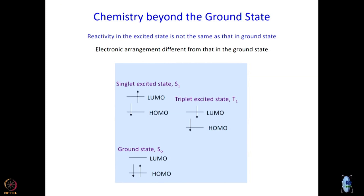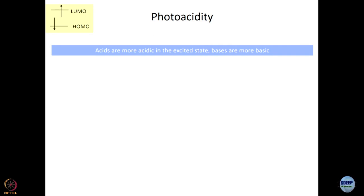Let us go to a more specific discussion on photo acidity. It is a general rule that organic acids are more acidic in the excited state, and organic bases are more basic. Take the example of phenol — it is a weak acid. Why is phenol acidic? The phenoxide ion formed by release of H+ is stabilized. Let us think in terms of an electron cloud on oxygen. If it can get delocalized, it is better. For that delocalization, it needs to be accommodated in some molecular orbital.